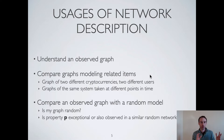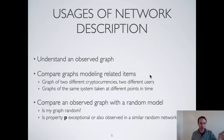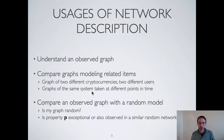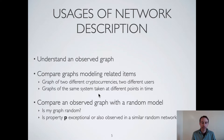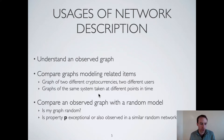The second application is when you want to compare graphs that model related items. For instance, you might have a network representing transactions in Bitcoin and another in Ethereum, and you want to know if these networks are similar. You can also compare networks taken at different points in time — for example, Bitcoin transactions today versus yesterday — to see if there are important differences that relate to real-world events.